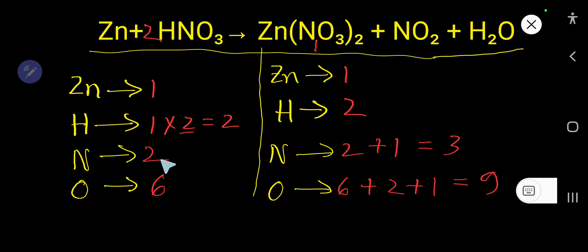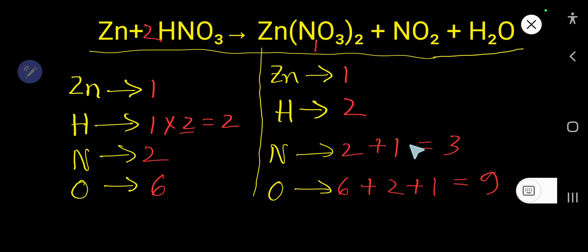Our nitrogen count is 2 on the right and 3 on the left. The issue is one is even and one is odd, so we try to make both even. The nitrogen on the left comes from HNO₃, so if we multiply HNO₃ by 2 we get 2 nitrogen on the left side as well.